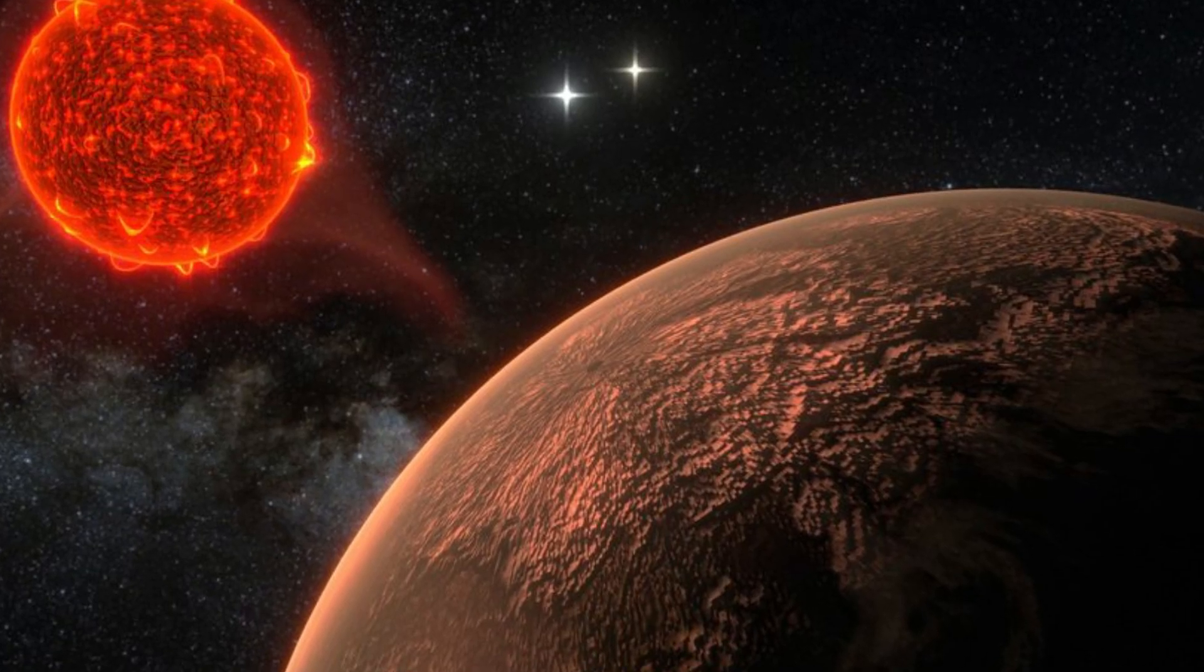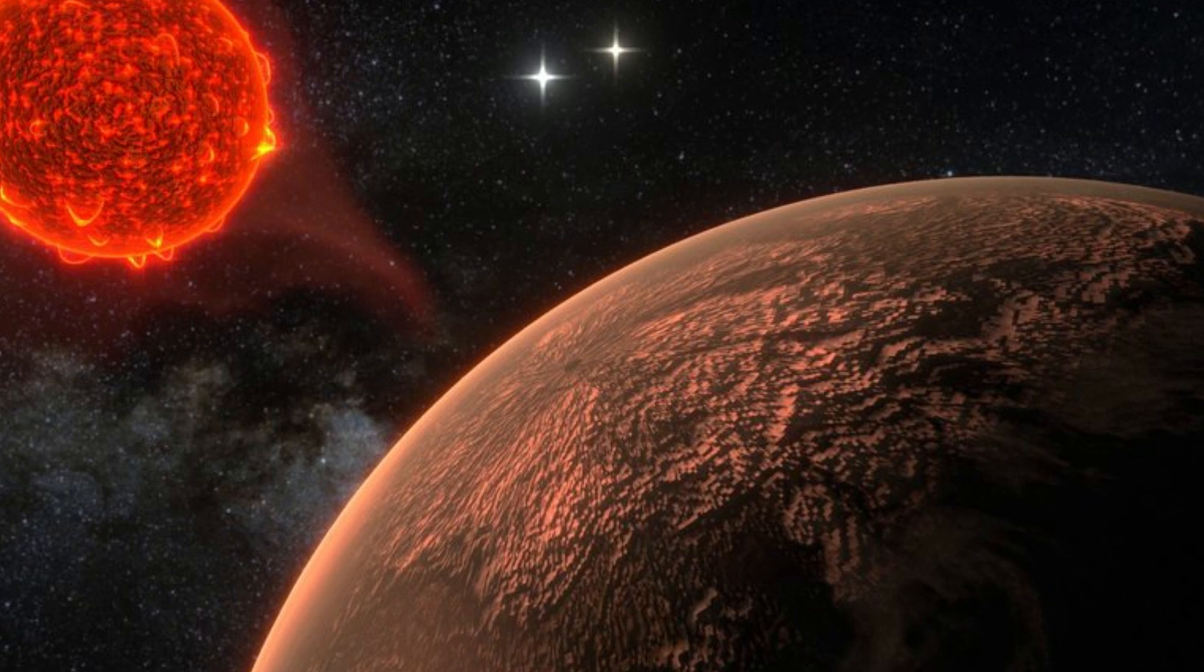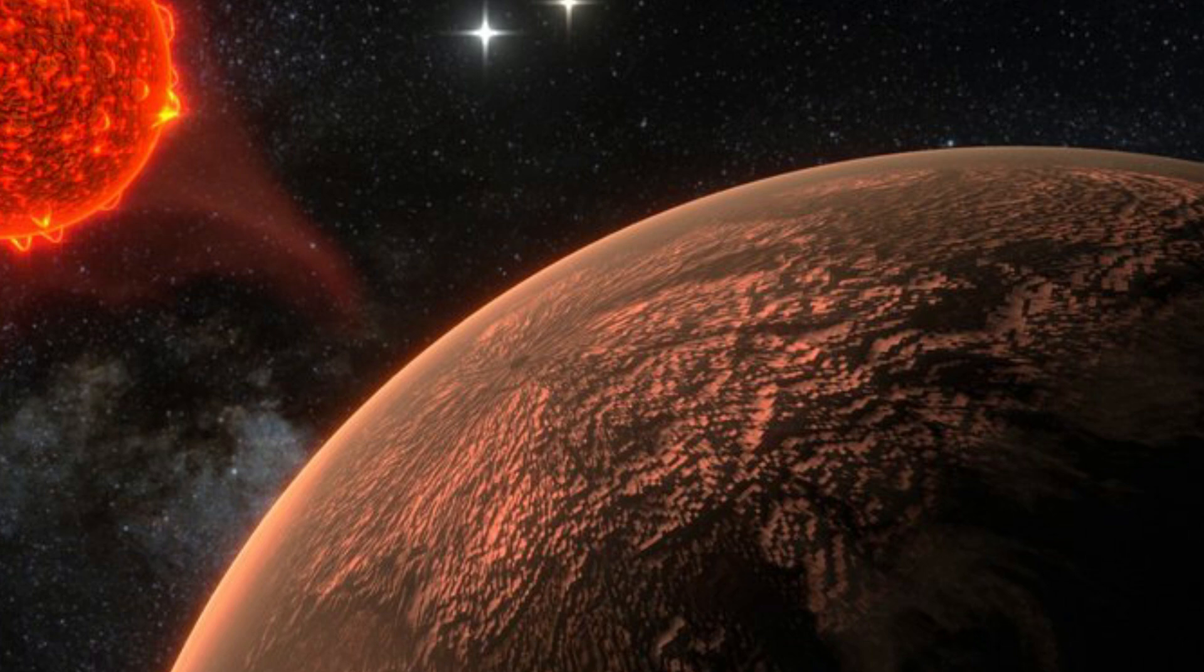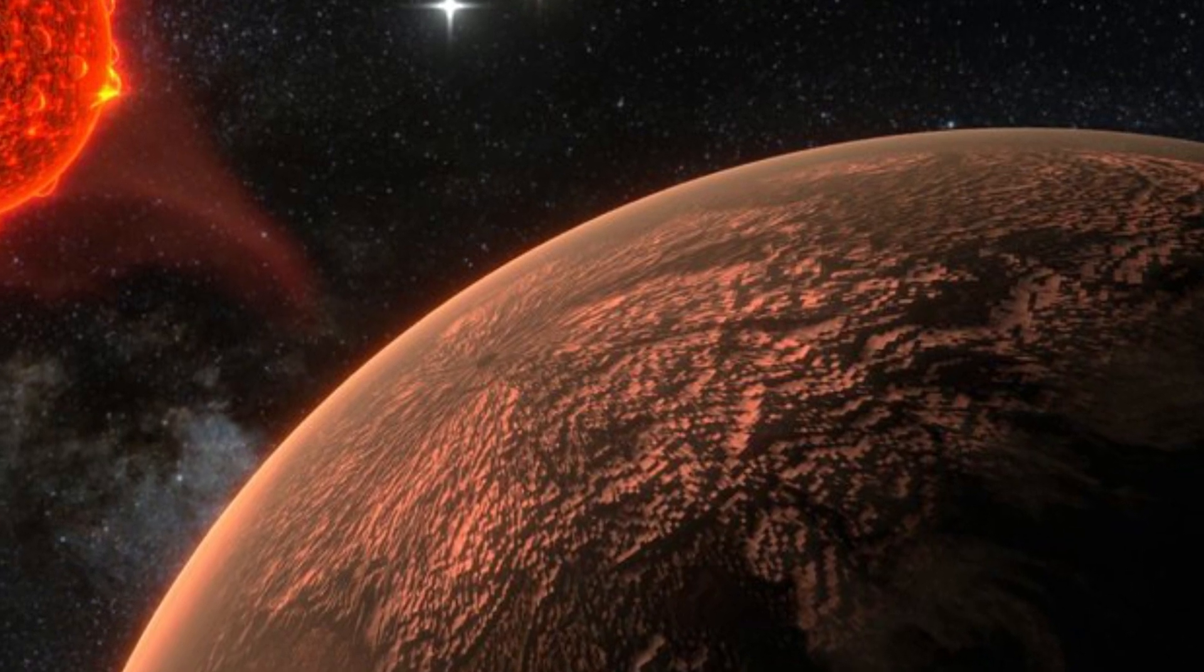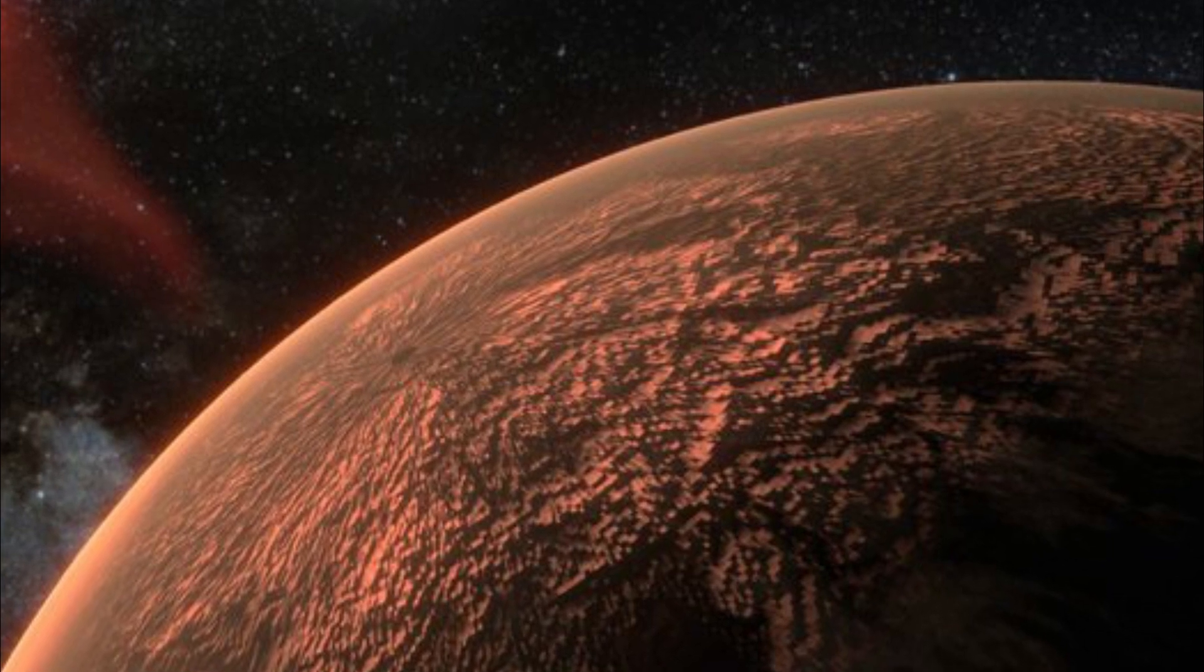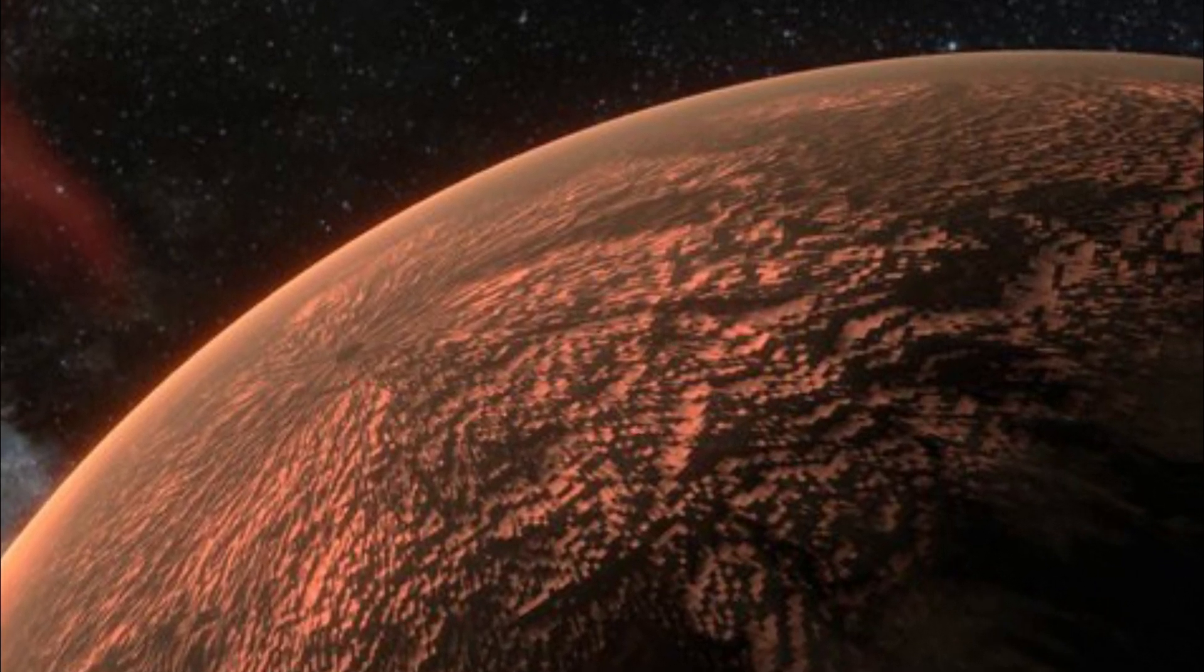First, let's talk about Proxima b itself. Orbiting the red dwarf star Proxima Centauri, Proxima b lies in the habitable zone, the perfect spot where liquid water might exist on its surface, making it a prime candidate for life as we know it.